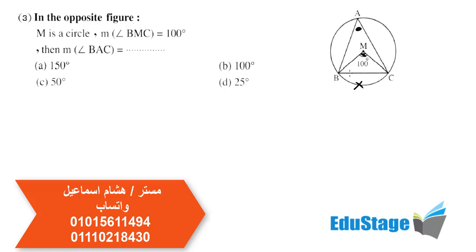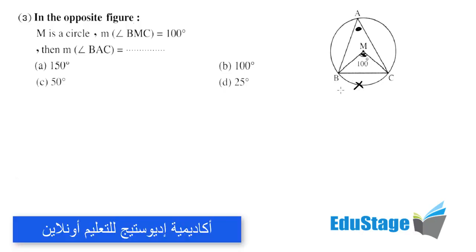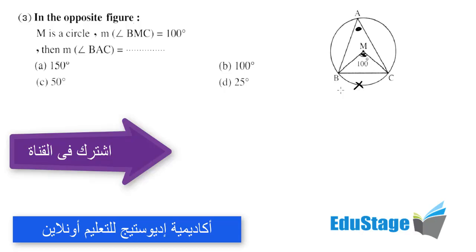Angle BMC is the central angle. The rule states that the measure of an inscribed angle equals half the measure of the central angle subtended by the same arc. So the measure of angle BAC equals half of 100, which equals 50 degrees.